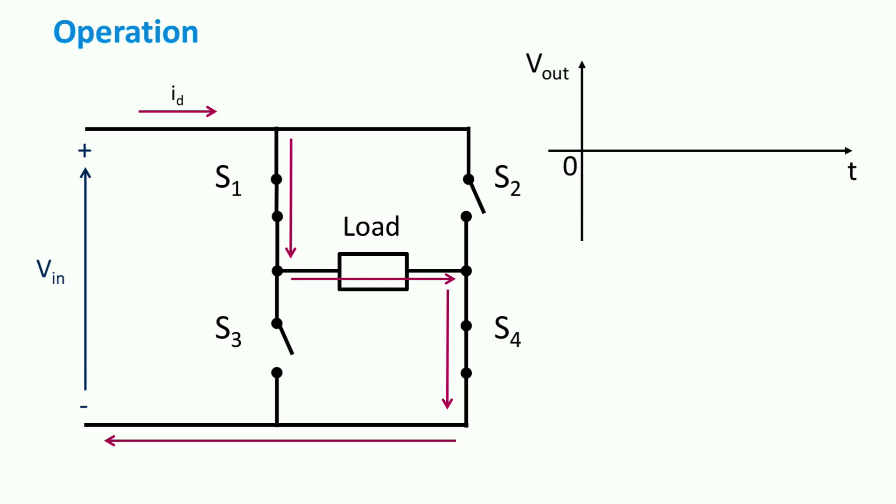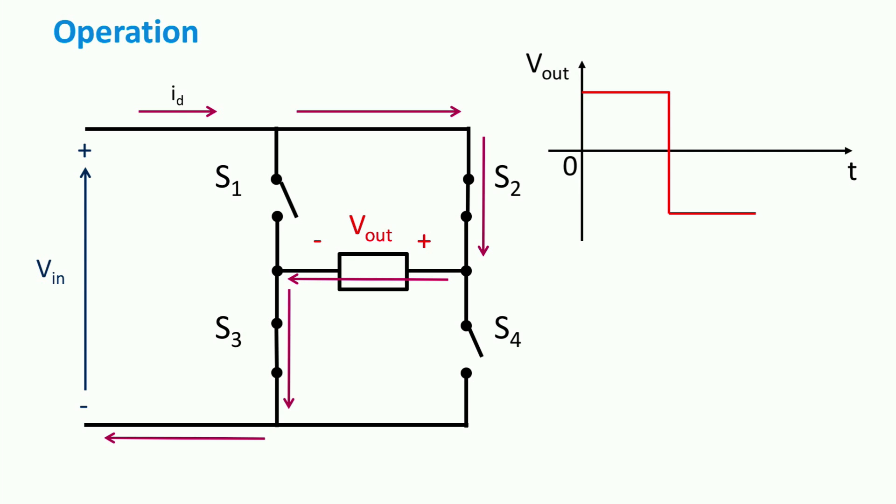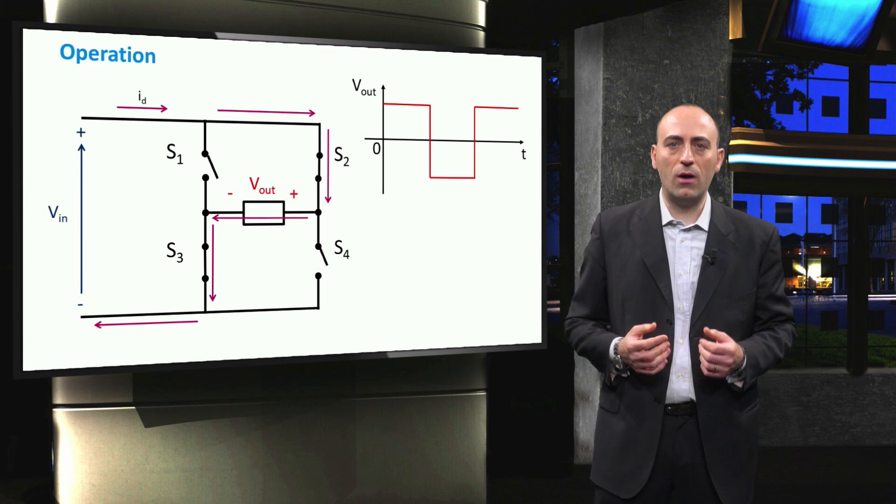When S1 and S4 are closed, the voltage has positive polarity and equals the input voltage. When there is a commutation between the two switched pairs, S1 and S4 are switched off, while S2 and S3 are switched on, almost instantly. The current will start to flow through S2 and S3 and again into the load. In this case, the voltage will be again equal to the input voltage, but of inverse polarity. This cycle goes on giving the typical square wave output voltage.